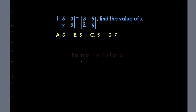If this matrix is equal to this matrix, find the value of x. We do this by subtracting the product of this from the product of this on the left hand side, and we do the same thing on the right hand side.